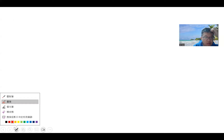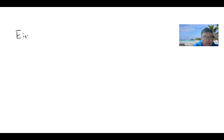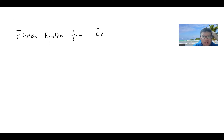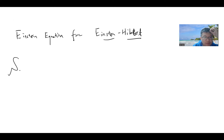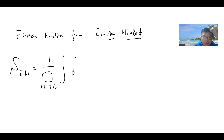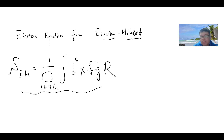In this video, we are going to derive the Einstein field equation. The goal is to derive the Einstein equation from a famous action called the Einstein-Hilbert action — Einstein being Albert Einstein and Hilbert being David Hilbert. The Einstein-Hilbert action is 1 over 16πG times the integral of d⁴x √(-g) R. This is the so-called Einstein-Hilbert action, basically the simplest gravity action.